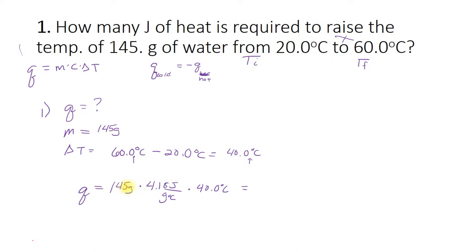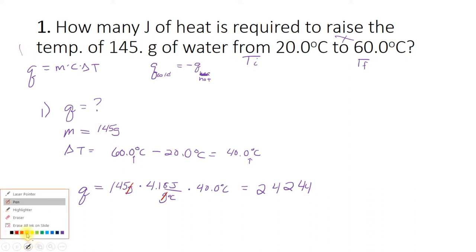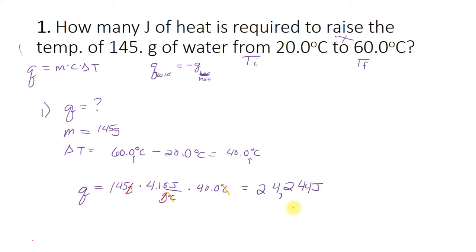I entered into my calculator: 145 times 4.18 times 40. The units are important — grams cancels because they're on opposite sides, and degrees Celsius also cancels, so we get joules left over, which is an energy unit. The calculator says 24,244 joules. Now I can't keep all of those numbers because I only have three significant digits in all of the numbers I'm multiplying. So after rounding, my final answer is 24,200 joules.